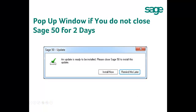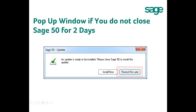If you restart Sage 50 but do not close the software for two days, a pop-up saying 'An update is ready to be installed. Please close Sage 50 to install this update' will appear. Again, you will be given the options to either install the update now or to remind me later.